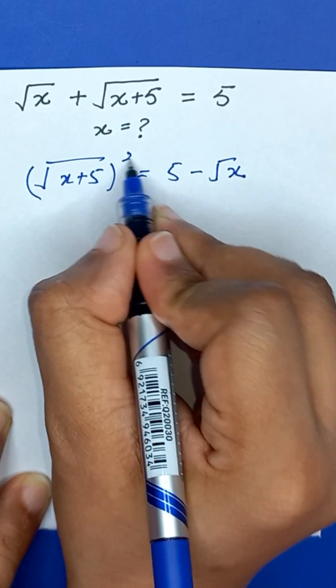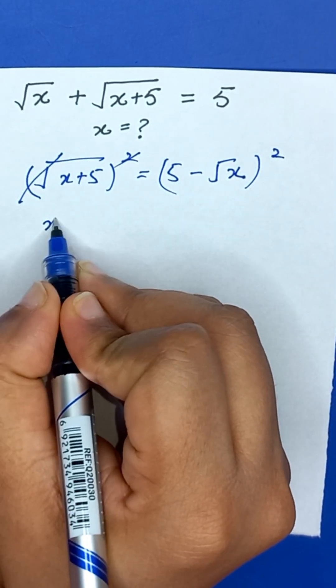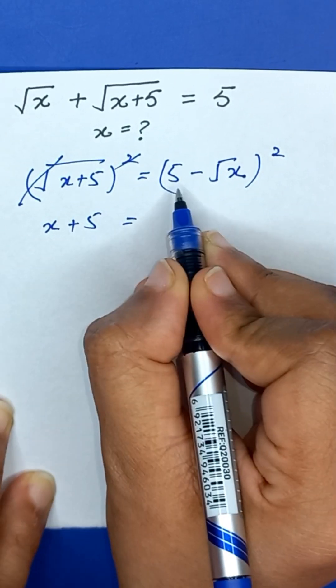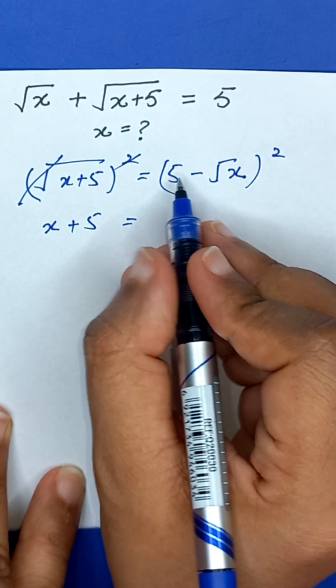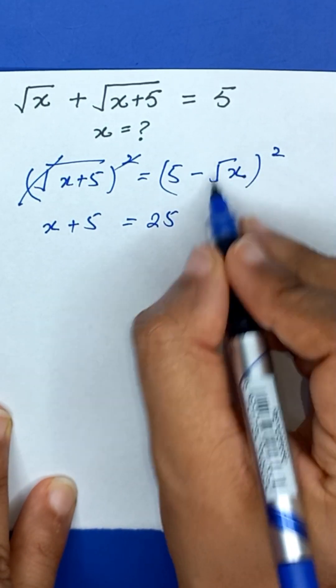By applying square on both sides, this square and square root will be cancelled out and it will be x plus 5. It is in the form of a minus b whole square, which is equal to a square, which is 25, plus b square.